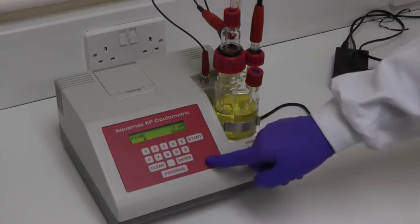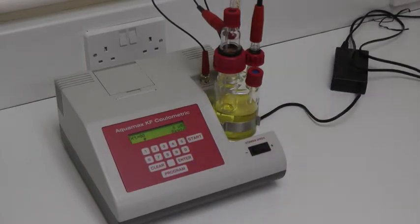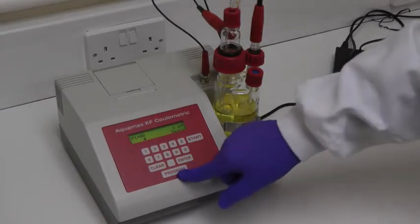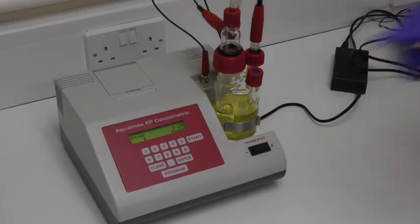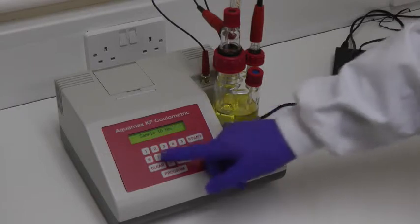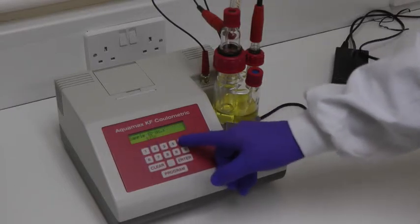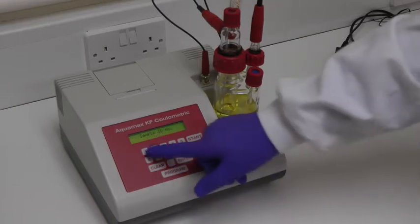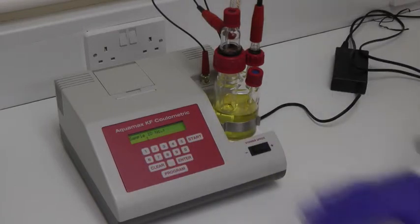Once in ready mode, the keypad is enabled, and the instrument can be programmed. The Program key displays a scrolling list of program parameters, beginning with the sample ID number. This can be up to 8 digits in length. To clear an entry, simply press Clear. To confirm an entry, press Enter.